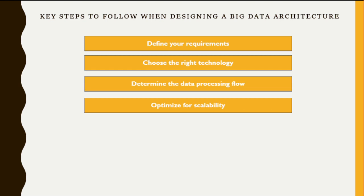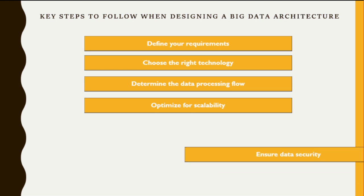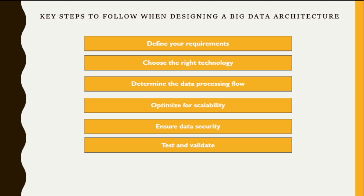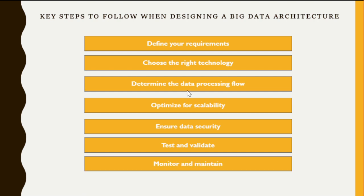We also have the key step of optimizing for scalability. Big data architecture should be designed to scale horizontally to handle increasing data volumes. You also need to ensure data security by implementing security measures to protect the data throughout the processing flow. The next step is to test and validate the architecture to ensure it meets the requirements and performs as expected. Finally, monitor and maintain the system to detect and resolve issues, and regularly update the architecture to ensure it continues to meet project requirements.